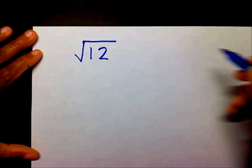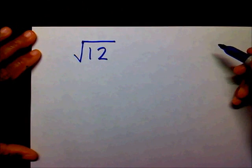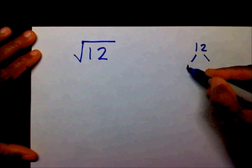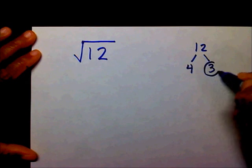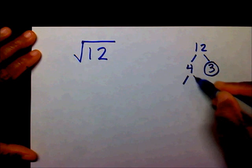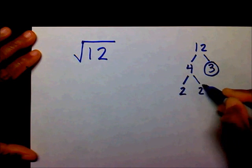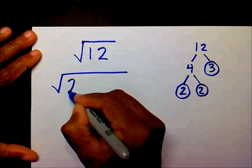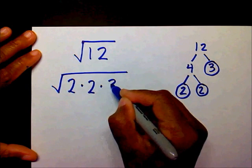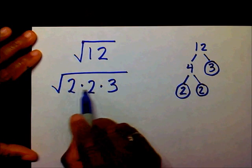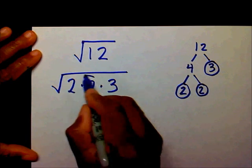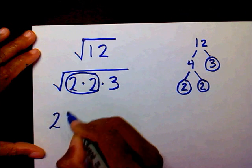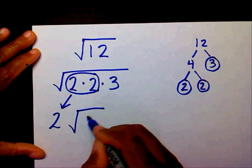Let's do another one: radical 12. I want to make a factor tree for 12 — that's going to be 4 and 3. 3 is a prime number. I'm going to break 4 down into 2 and 2. So under my radical symbol I now have 2, 2, and 3. If I multiply 2 times 2, that's 4, which is a perfect square. Square root of 4 is 2, so that goes on the outside, and 3 stays on the inside.